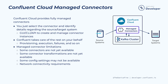To start, you simply select the connector and fill in a few configuration details about your source or target system. This can be done using the Confluent Cloud Console, the Confluent CLI, or the Confluent Connect API. From there, Confluent takes care of the rest on your behalf. Using the configuration settings you specified, your connector instance is provisioned and run.